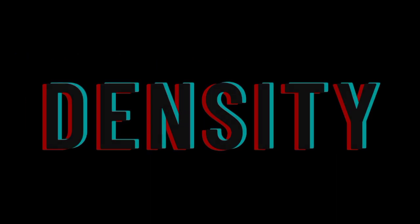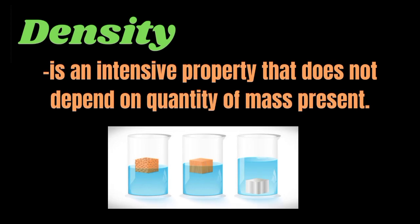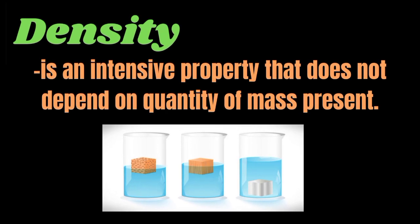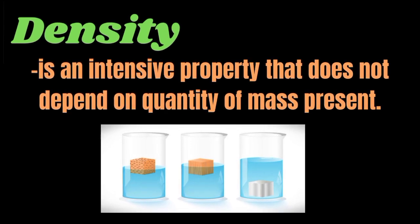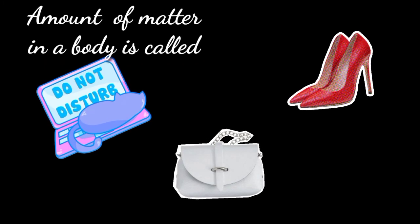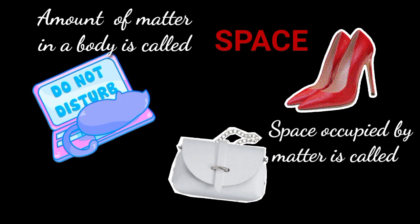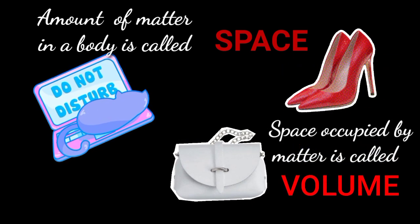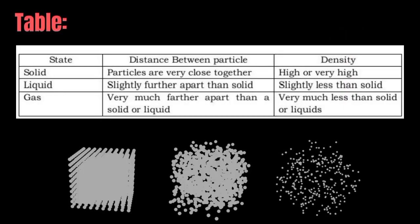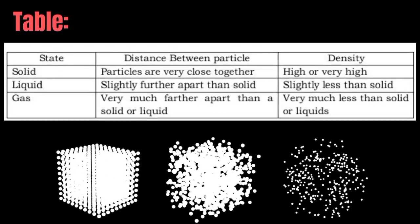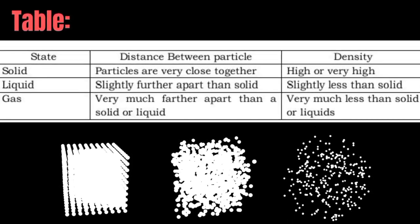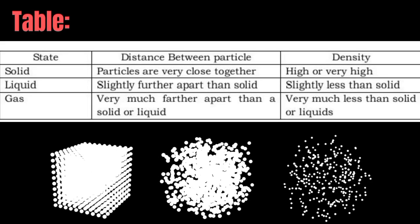Density is an intensive property that does not depend on the quantity of mass present. Density is a measure of how much matter is in a given amount of space. The amount of matter in a body is called mass, while the space occupied by matter is called volume. This table shows the states of matter, the distance between particles, and their density.